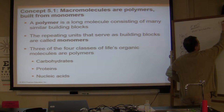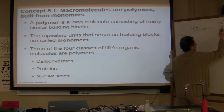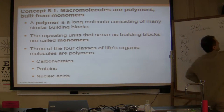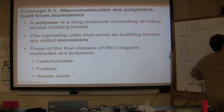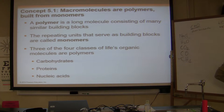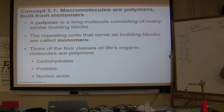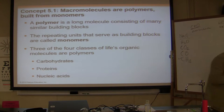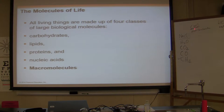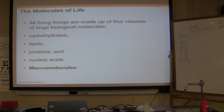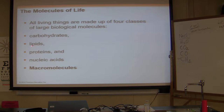For lipids, the building block is fat molecules — triglycerides. For proteins, the monomer is amino acids. For nucleic acids, the monomer is nitrogenous bases. Three of the four classes — carbohydrates, proteins, and nucleic acids — form polymers. Lipids are a bit different, which is why they're not included with the others.